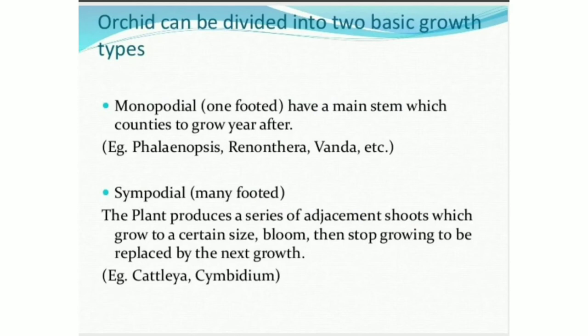Orchids can be divided into two basic growth types. Monopodial, meaning one-footed, have a main stem which continues to grow year after year. Examples include Phalaenopsis, Renanthera, and Vanda. Sympodial, meaning many-footed, the plant produces a series of successive shoots which grow to a certain size, bloom, then stop growing to be replaced by the next growth. Examples include Cattleya and Cymbidium.